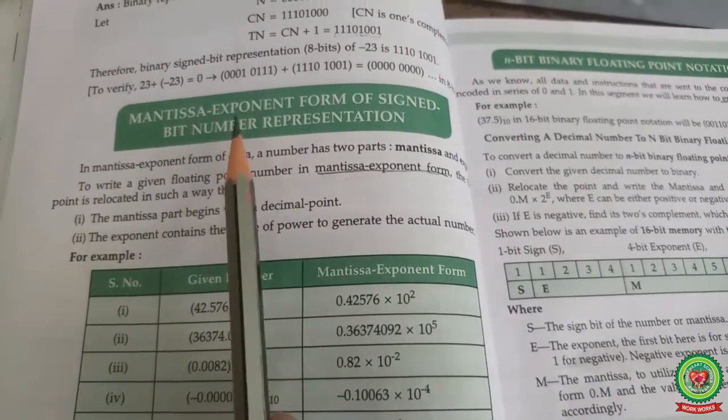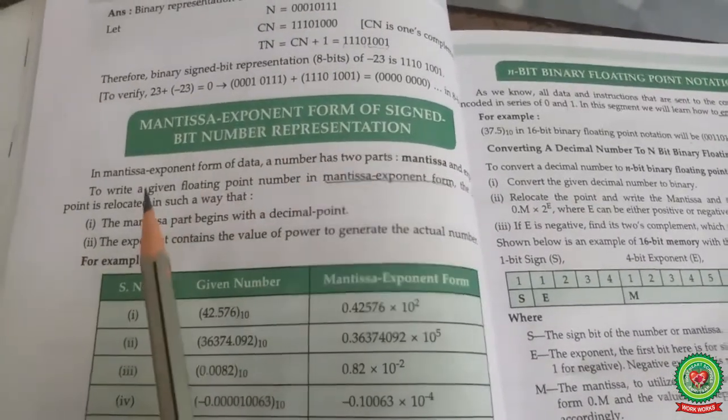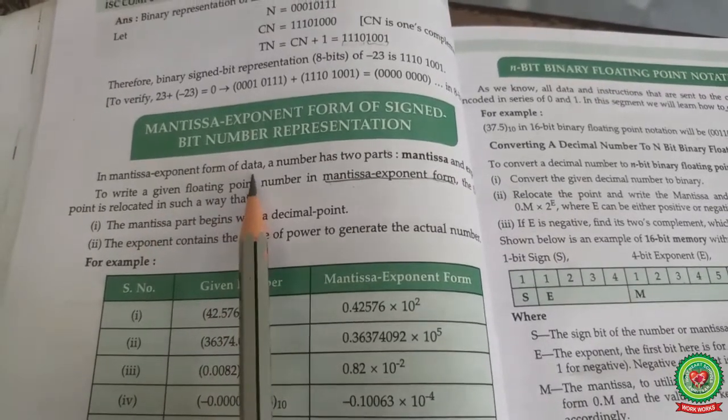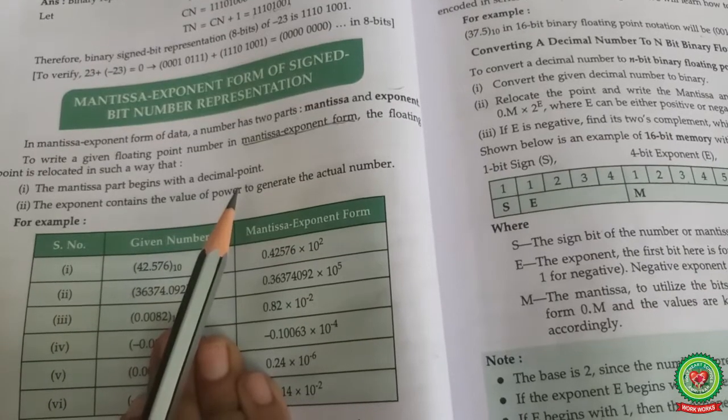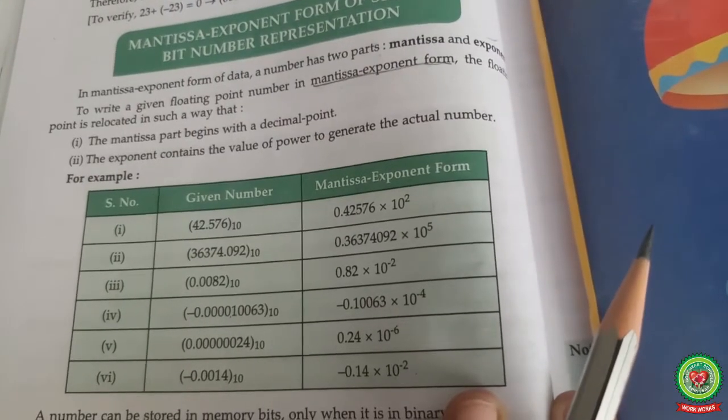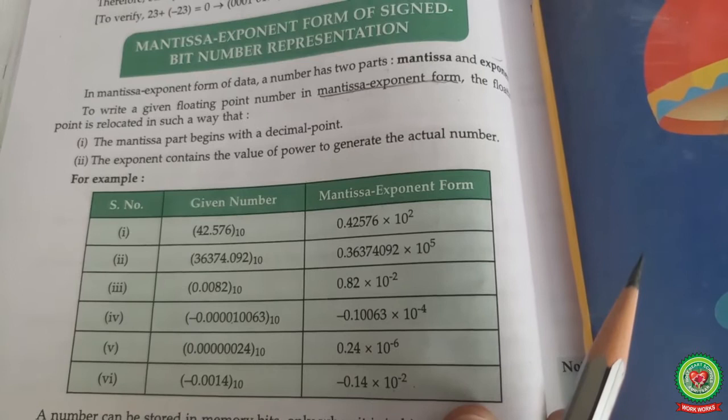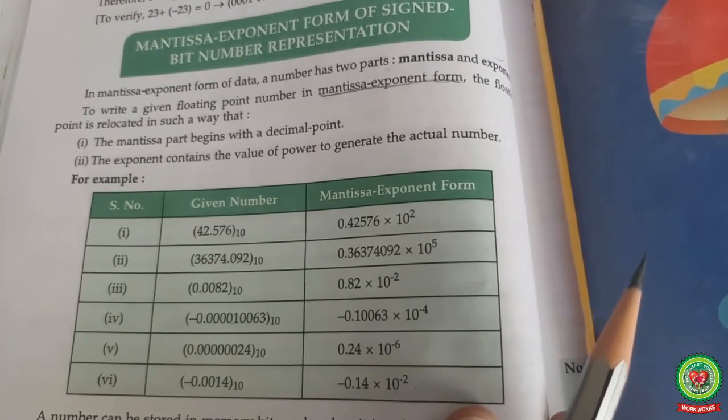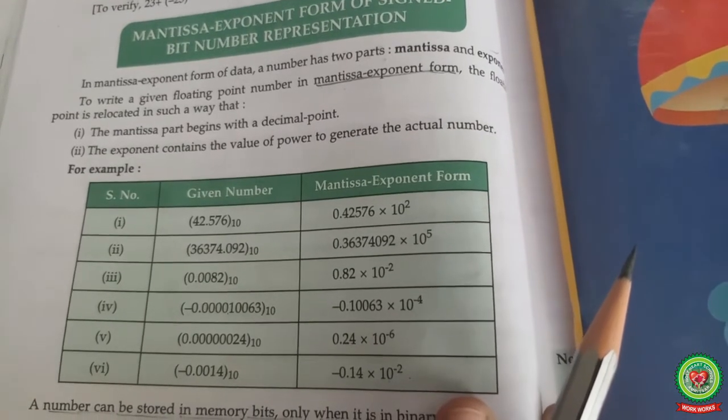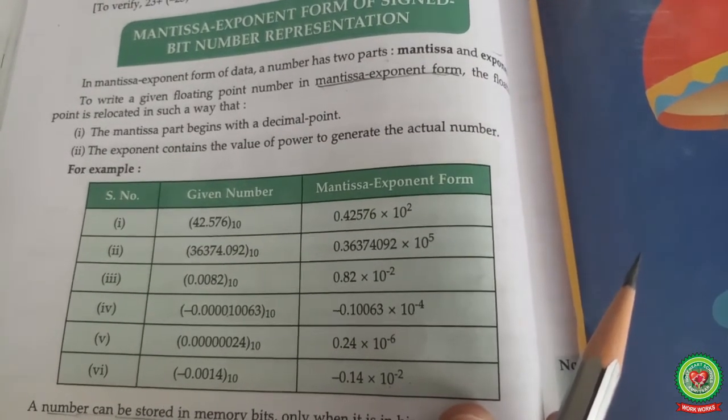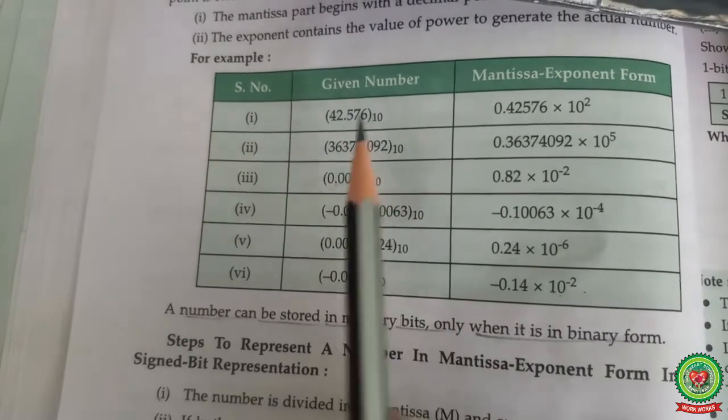In mantissa exponent form, a number has two parts: mantissa and exponent. To write a given floating point number in mantissa exponent form, the floating point is relocated such that the mantissa part begins with a decimal point, and the exponent contains the value of part which integrates the actual number. Let's understand the example.